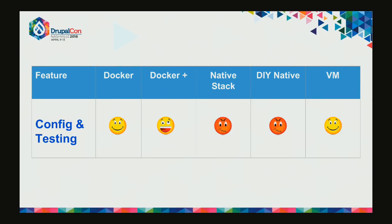Configuration and testing scorecard: Docker is pretty good, Docker Plus is amazing. Native stack like MAMP is pretty horrible for sharing configurations - the tech lead probably has to walk around to everyone's desk. Similarly with DIY native - tech leads walking around to desks, team members using their own PHP versions and running invalid tests. You can end up in bad places when tests aren't valid in production or the team has trouble collaborating. VMs are pretty good because you can have a configuration file for them.